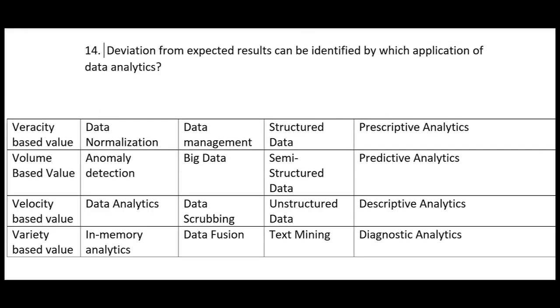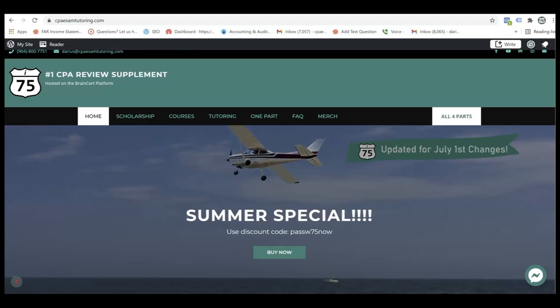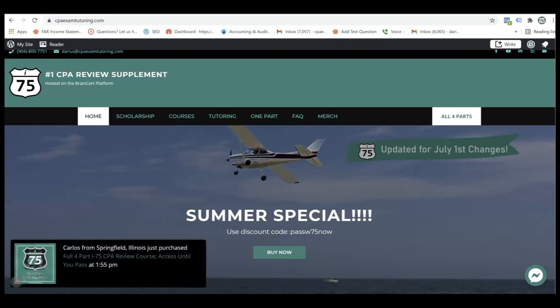Number fourteen: deviation from expected results can be identified by which application of data analytics? Think you know the answer? Leave a message in the comment section. Then go to cpaexamtutoring.com, home of the I-75 CPA review course, and get on the right road to passing the CPA exam.